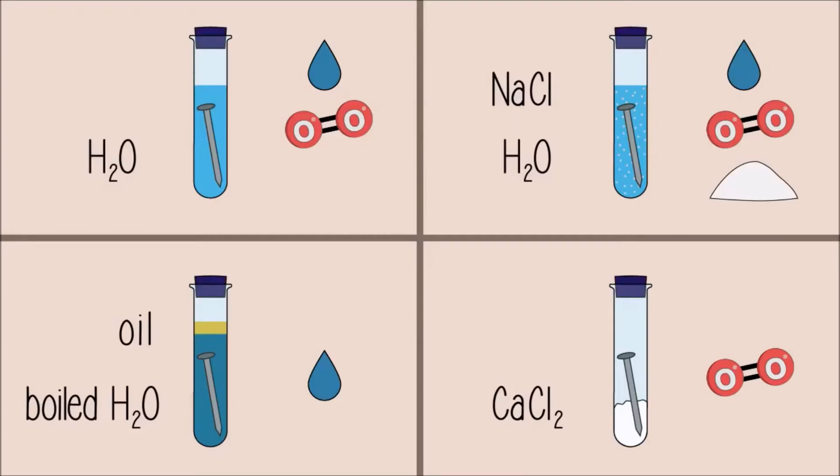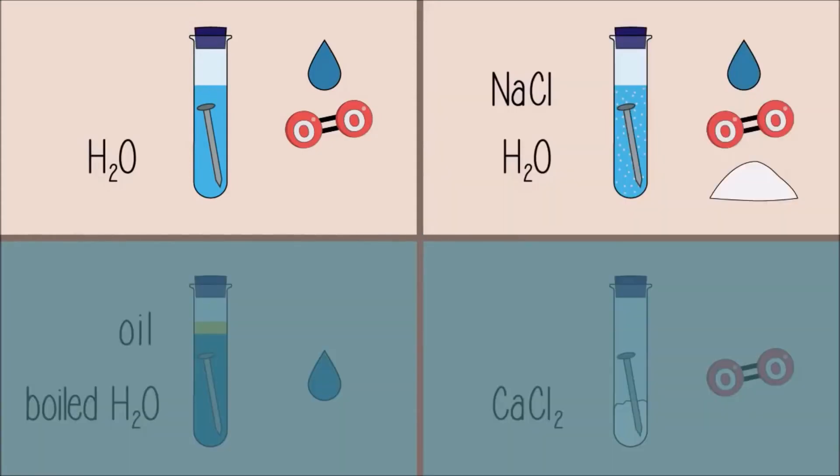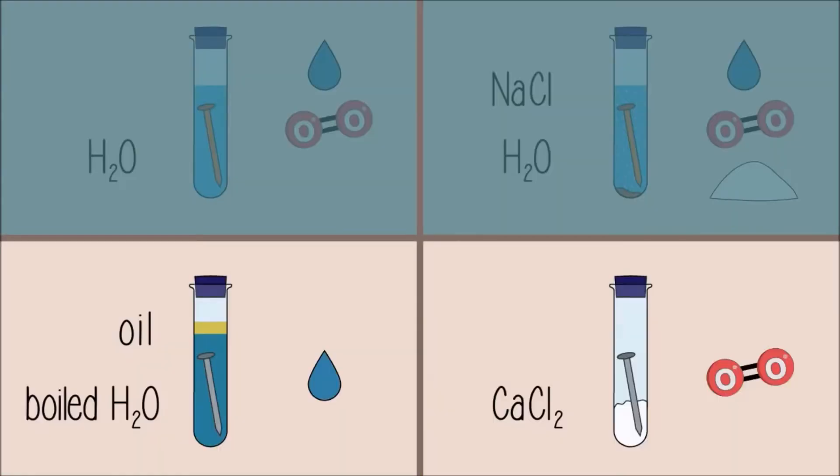Stopper all four test tubes with a rubber bung and let stand for a couple of days. You will find that the nails in the first and second test tubes have rusted. In particular, the nail in the second test tube has rusted more than the nail in the first test tube, and the rust has likely flaked off. You may see a reddish-brown precipitate at the bottom of these tubes. The nails in the third and fourth test tubes have not rusted.